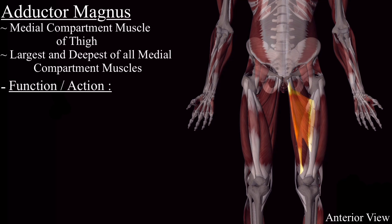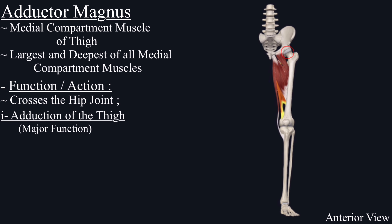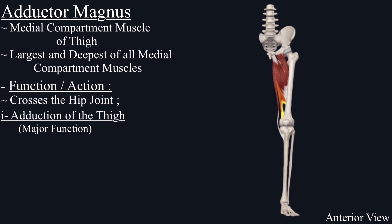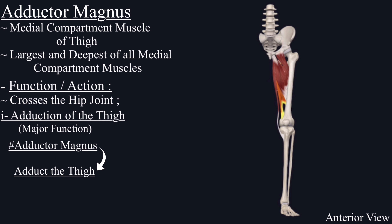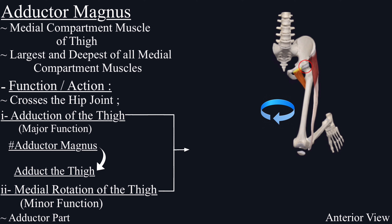Next is the function. The adductor magnus muscle only crosses the hip joint, and its main action on the hip joint is adduction of the thigh. Since this muscle is present medial to the hip joint, contraction of this muscle will pull the thigh medially. The name adductor magnus also suggests its action. This muscle also helps in medial rotation of the thigh, but this is a minor function, and mainly the adductor part is responsible for medial rotation. These two actions are similar to the adductor brevis and adductor longus muscles.